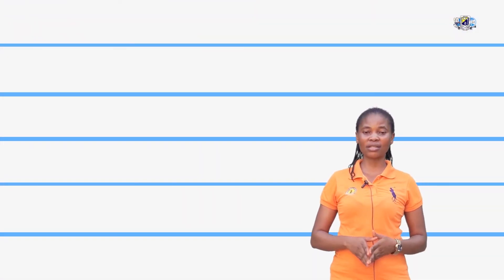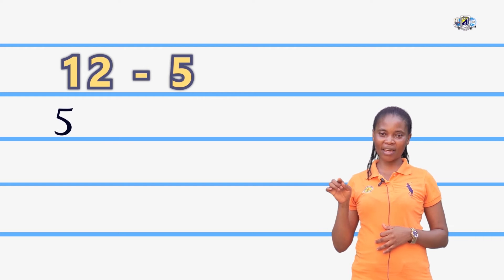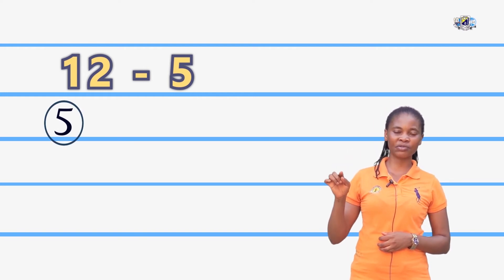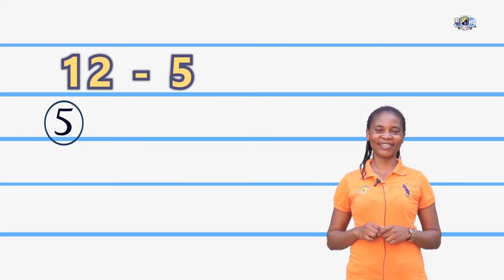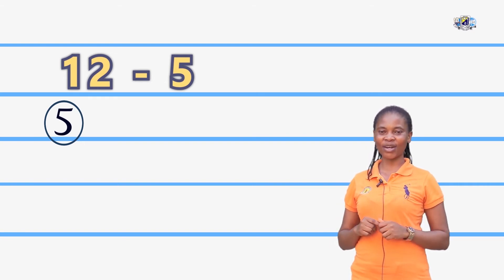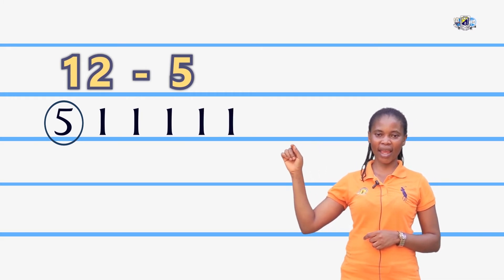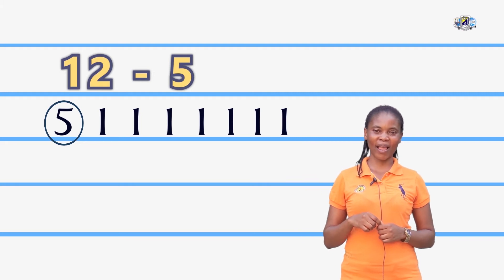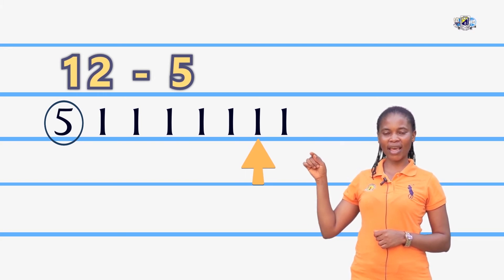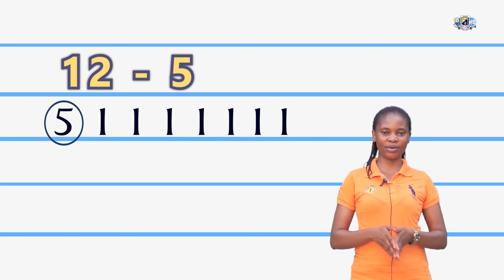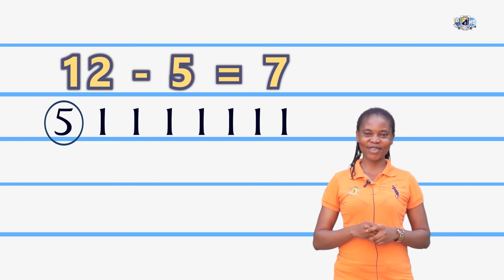The next one is 12 minus 5. Pull down your 5, circle it, and count on from 5 to 12. When you get to 12, you stop. So let's count on: 5, 6, 7, 8, 9, 10, 11, 12. Now let's count what we have: 1, 2, 3, 4, 5, 6, 7. So 12 minus 5 equals 7.